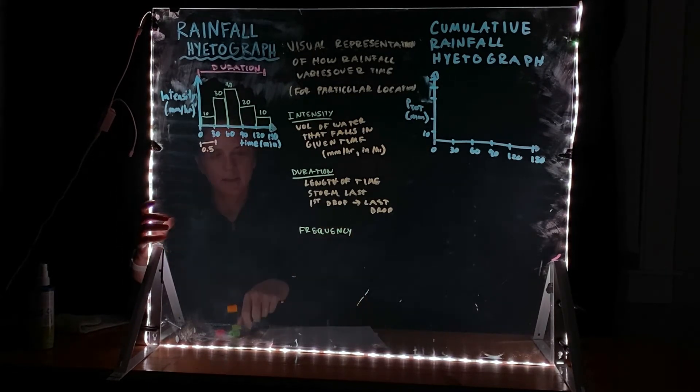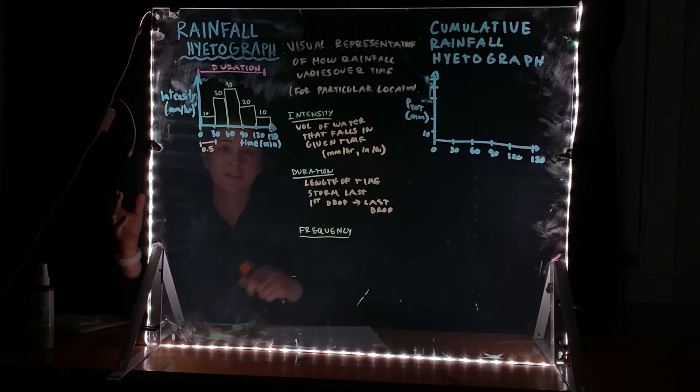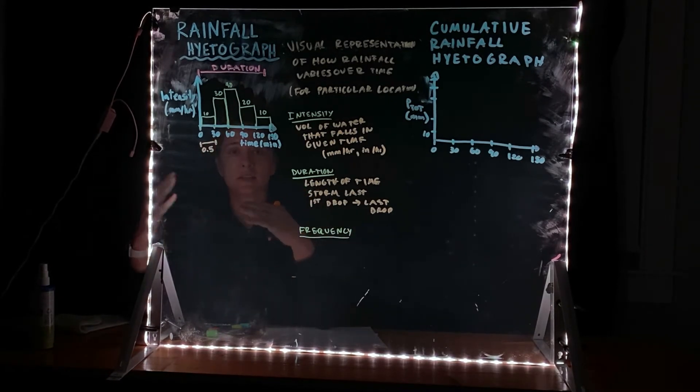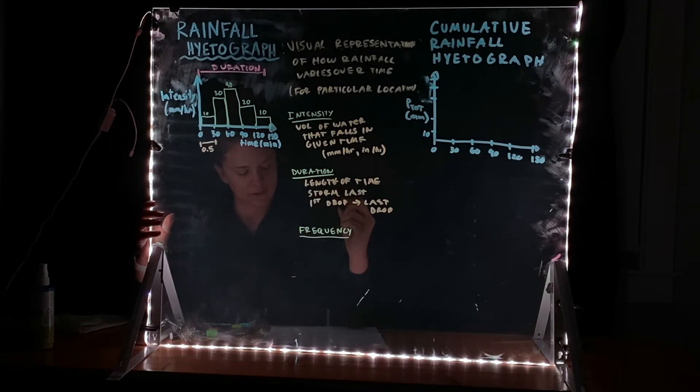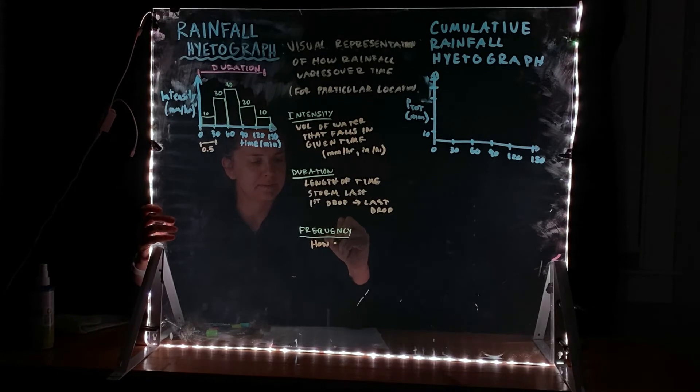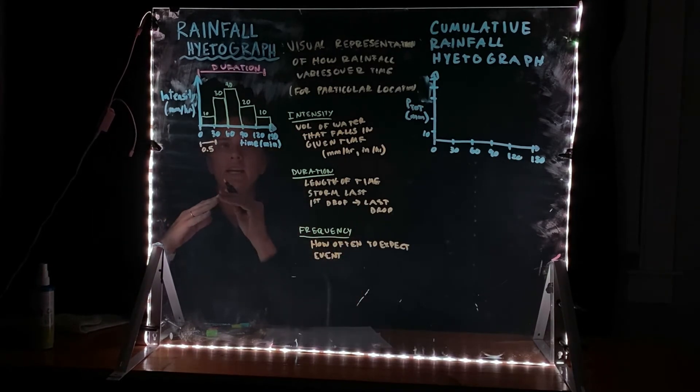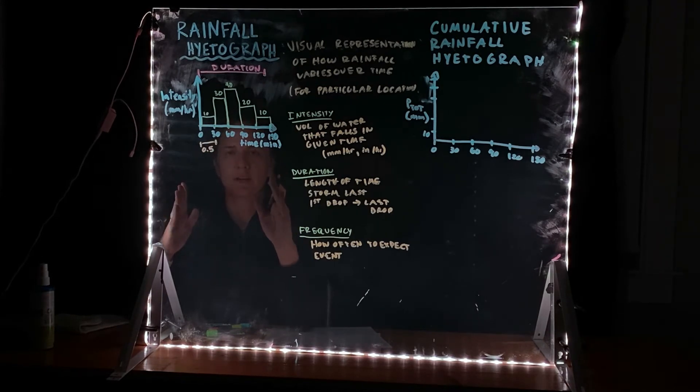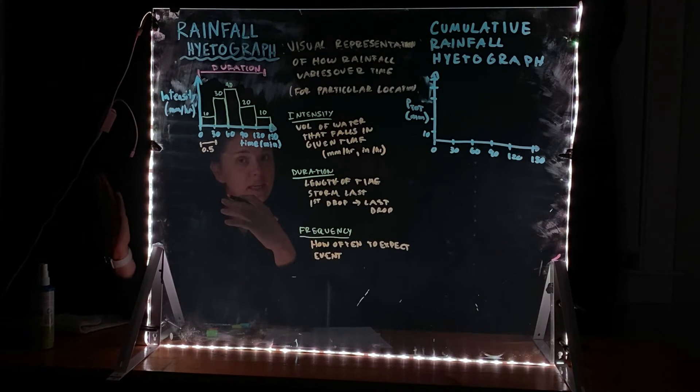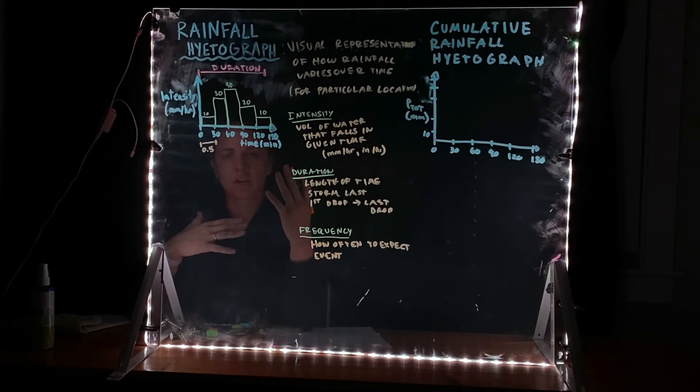The frequency is a little bit more complicated and this goes into statistics. So you're going to need to think back to your statistics course here to think about frequencies. The frequency is how often to expect an event. So how often can I expect this particular storm that I represented to occur? Is it going to happen every time it rains? Is this a rare event? Is this a lot of rain for 150 minutes? The frequency is going to tell us that information.